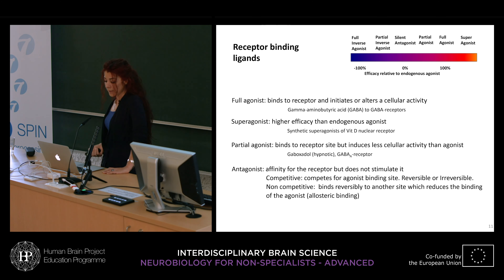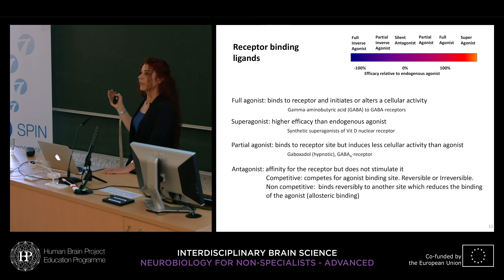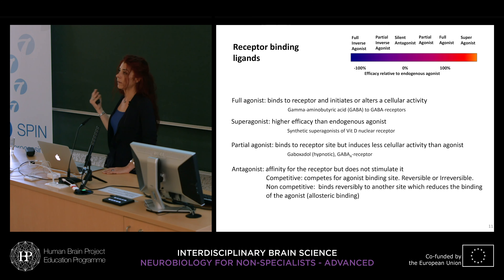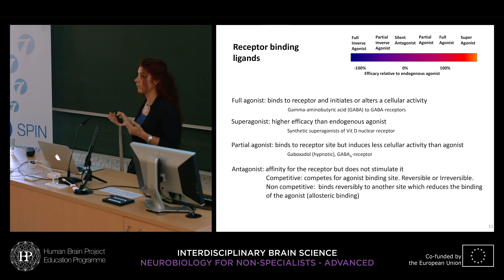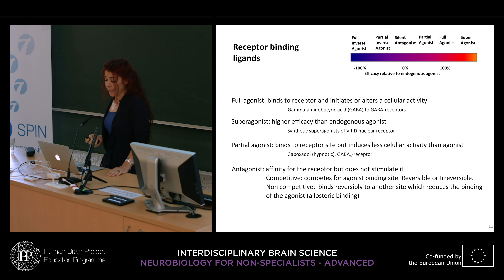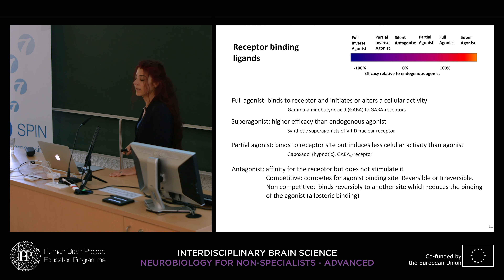Antagonists have affinity for the receptor but do not stimulate it. Competitive antagonists compete with agonists for the binding site and can be reversible or irreversible — irreversible antagonists bind so tightly or form covalent bonds that they dissociate very slowly or not at all. Non-competitive antagonists bind reversibly to the receptor but at a site different from the agonist site — this is called allosteric binding.